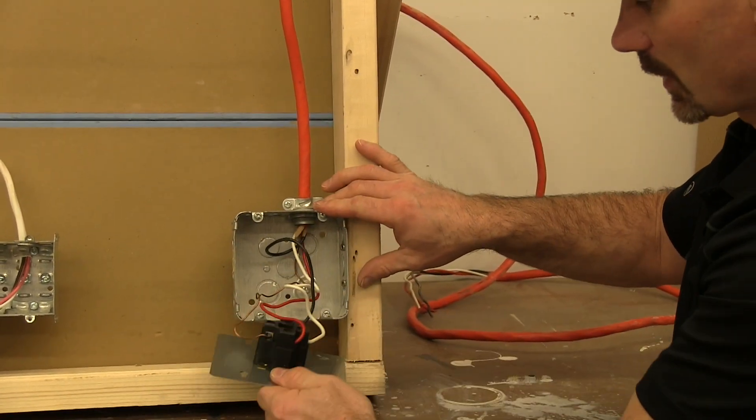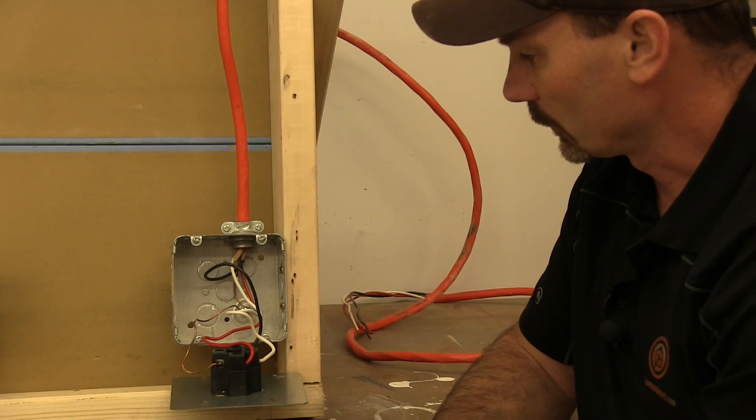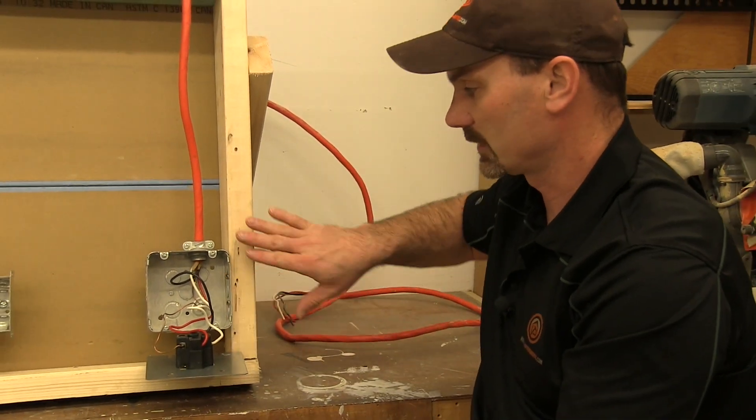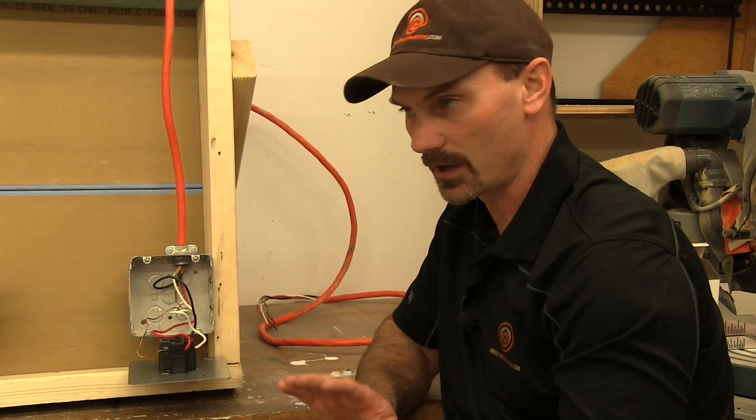So that's the basics on dryer wiring. It's also nice to have it recessed back into the wall too so your dryer can go tighter to the wall if it needs to, or room for ducting.